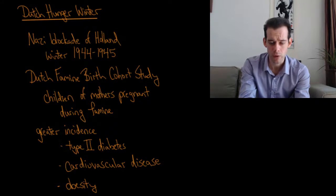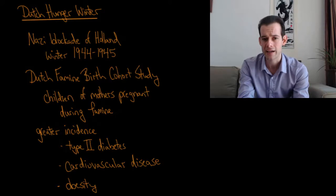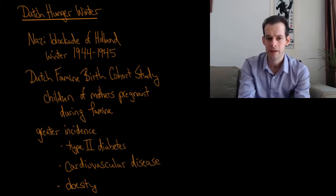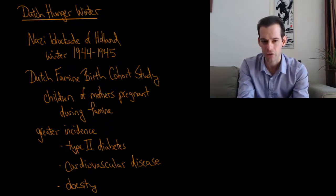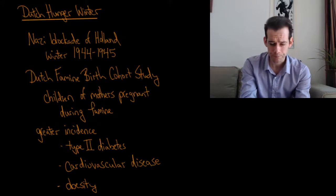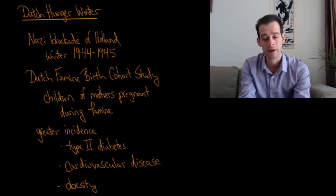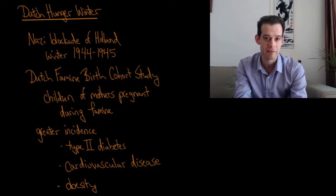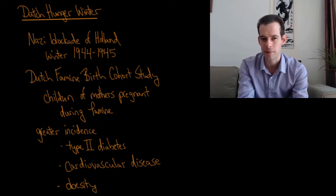One of the things that the Dutch famine birth cohort study found was that the children of mothers who were pregnant during the famine, particularly those in the later trimesters, in the second and third trimester, these children, when they grew up and became adults, they had a greater incidence of things like type 2 diabetes, cardiovascular disease, and obesity. This is compared to the children who were born before the famine or who were born several months after the famine had ended.